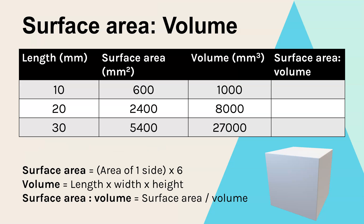Let's have a look at this relationship of surface area compared to volume. I'm going to do this example with three cubes of different sizes. One cube has a length of 10 millimetres, another of 20, another of 30. What you could be asked to do in the GCSE is to calculate the surface area, the volume, or the surface area to volume ratio. The surface area is worked out by finding the area of one side — length times width — and because it's a cube that would be 10 by 10.